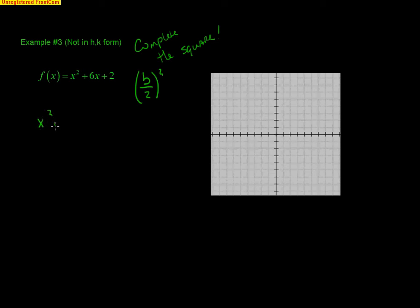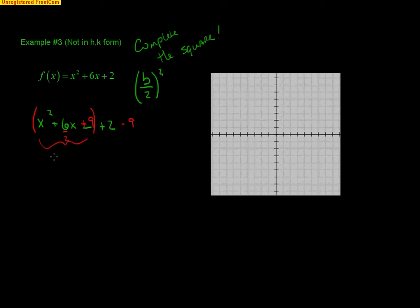Let's look at how we do this. I've got x squared plus 6x plus 2. To complete the square, I take 6, divide it by 2 to get 3, then 3 squared is 9. I can't just add 9 — I have to balance it by adding 9 and subtracting 9 on the same side. The part in parentheses factors as a perfect square: x plus 3, all squared — the middle term divided by 2 is always your answer inside. Then 2 minus 9 gives negative 7. Therefore, the vertex is at negative 3, negative 7.